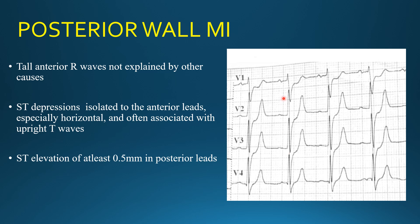Looking at our patient, we can see R waves in V1-V2, but they don't seem to be too tall. There is a deep S wave, so the R wave is not tall enough to definitively suggest posterior wall involvement. However, we can see horizontal ST depressions, and these are followed by upright T waves — so this criterion is met.